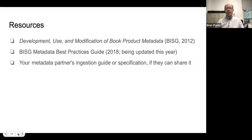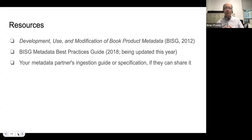We put together a short list of resources. The first link is the 2012 report Claire has been talking about. There's also a metadata best practices guide that was updated in 2018, and Claire is part of an effort to update it again for ONIX 3.0 — that update will probably take most of this year. Ralph and Claire both talked about understanding, as a publisher, whether your recipients have guides or specifications they can share — that's a good place to start. Even if they don't have a document, having a conversation with them is probably the core list of things to consider.